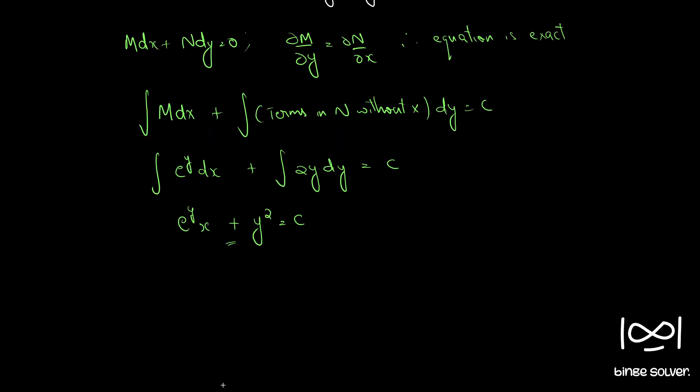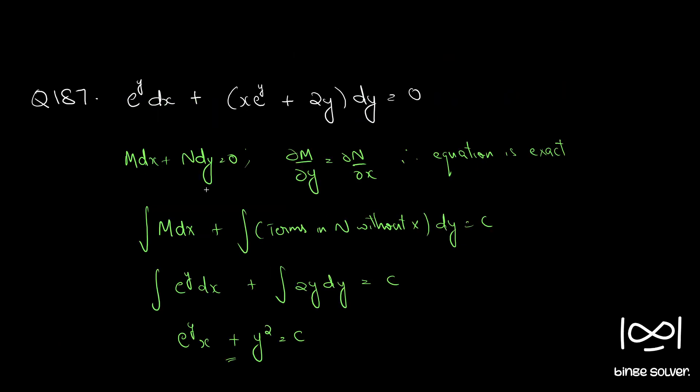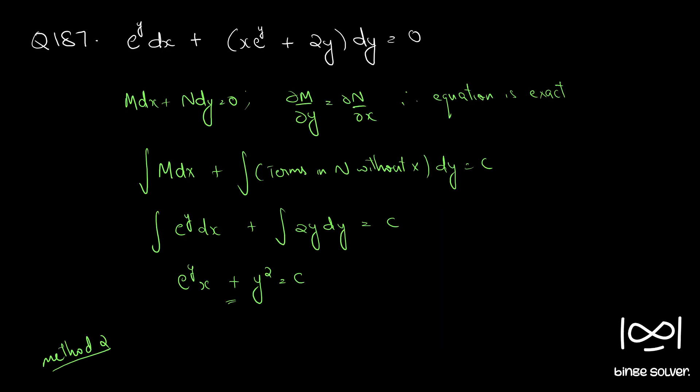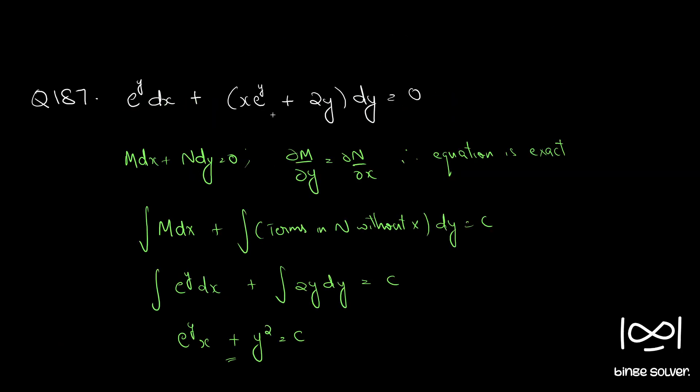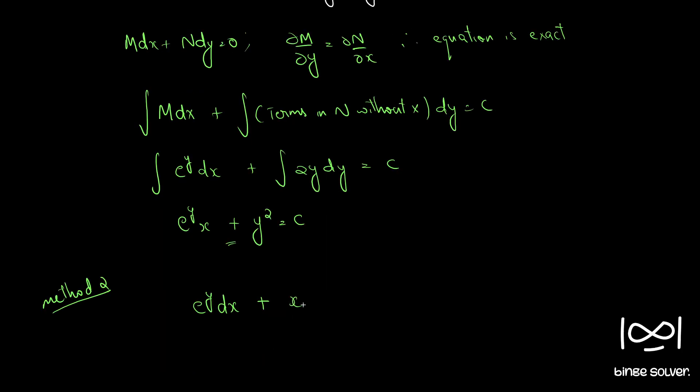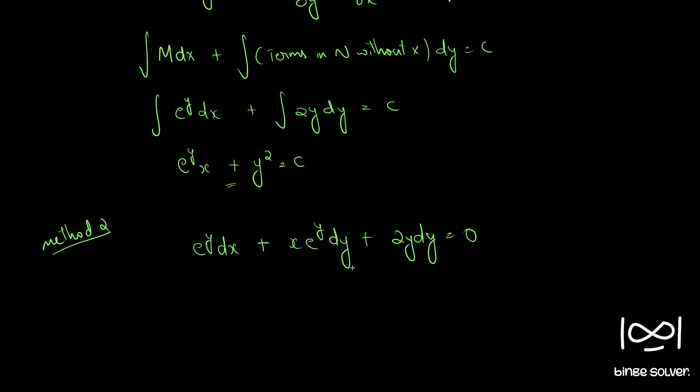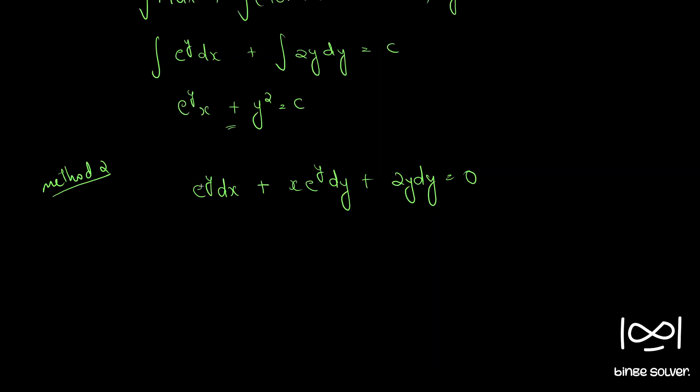So we get the solution as this but if method 2 we will rearrange this. e raised to y dx, we can write e raised to y dx plus x e raised to y dy plus 2y dy equal to 0. So if you observe we can see that this is differential d of